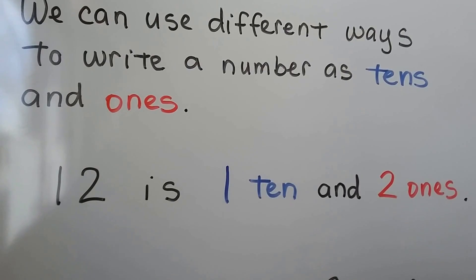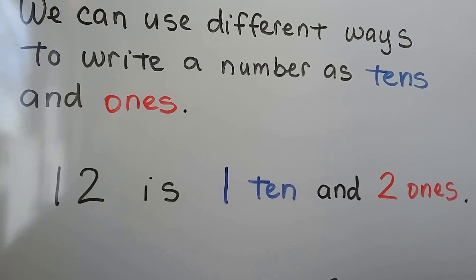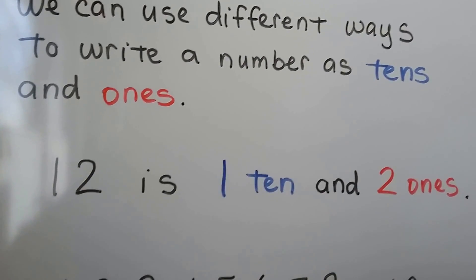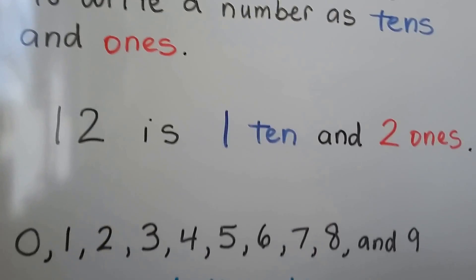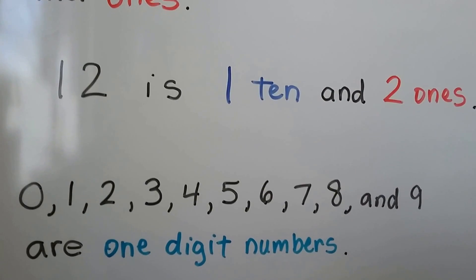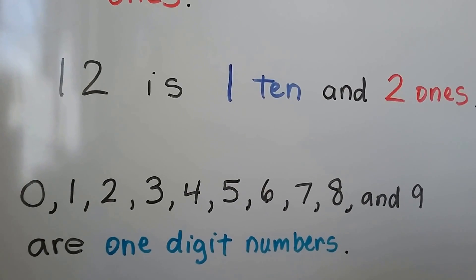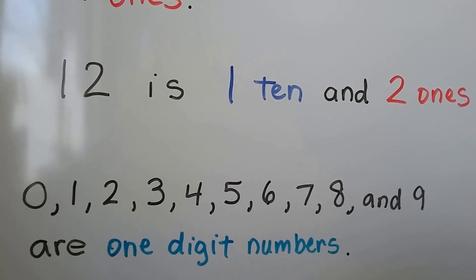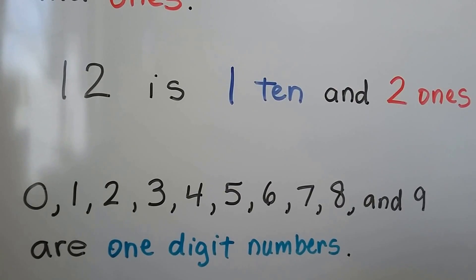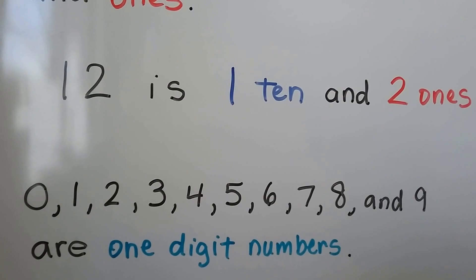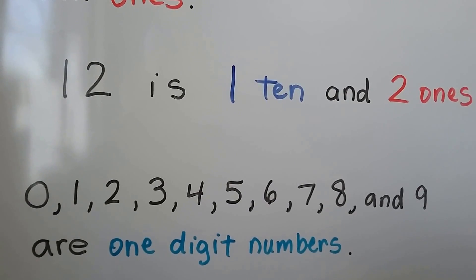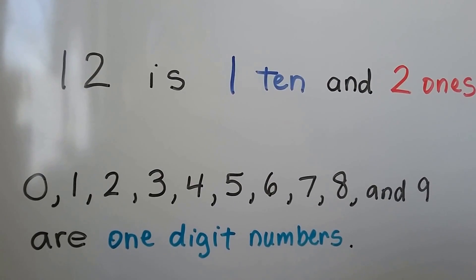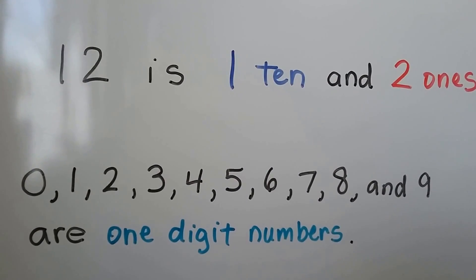We have 12. 12 is one 10 and two ones. 0, 1, 2, 3, 4, 5, 6, 7, 8, and 9 are one-digit numbers.